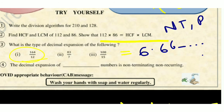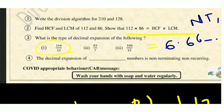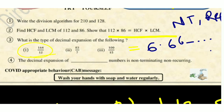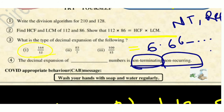The decimal expansion of the fourth number is also non-terminating non-recurring. Since both are non-terminating non-recurring, this type of number is an irrational number.